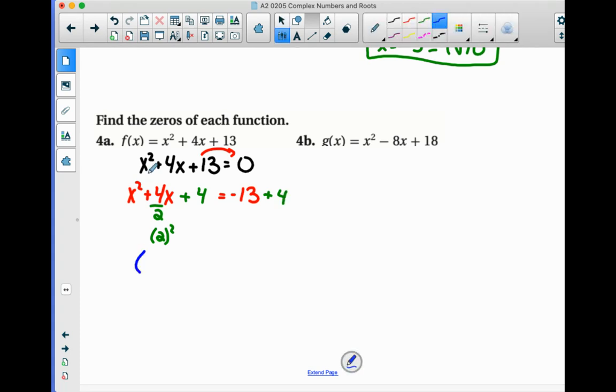So left side factors to x plus 2 squared. The right side, negative 13 plus 4 is negative 9. We square root of both sides. Square root of negative 9 would be plus or minus 3i.